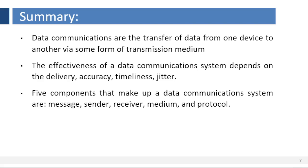To summarize, data communications are the transfer of data from one device to another via some form of transmission medium. The effectiveness of a data communications system depends on delivery, accuracy, timeliness, and jitter. The five components that make up a data communications system are message, sender, receiver, medium, and protocol.